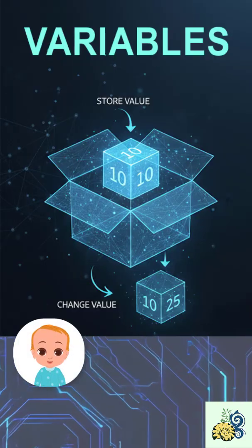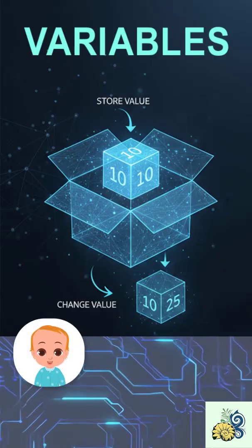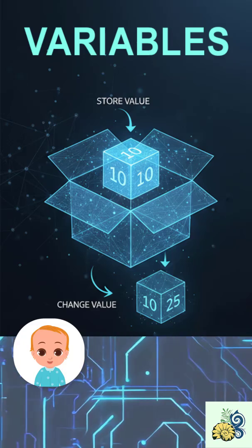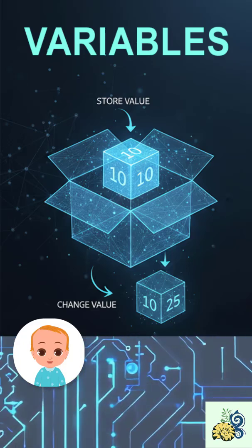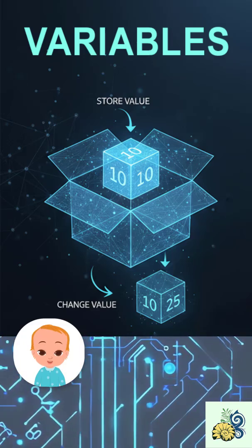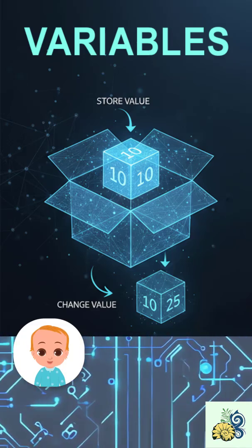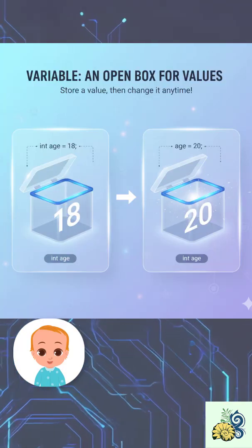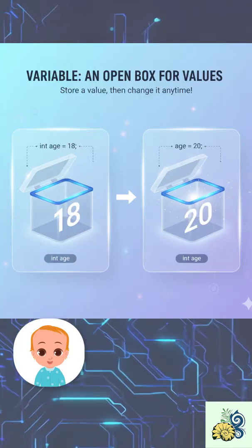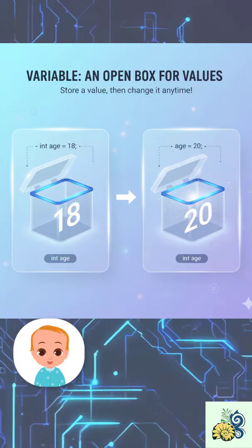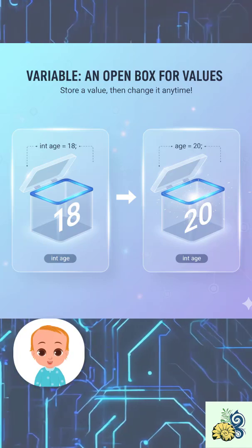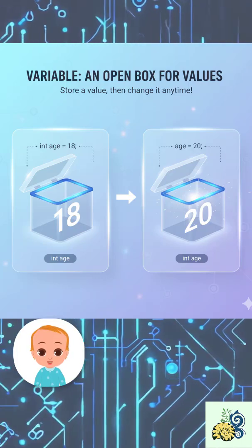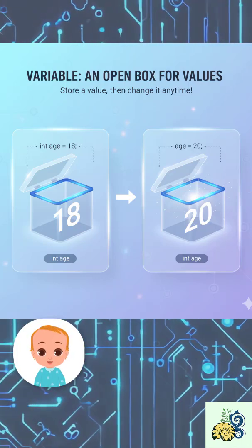So what is a variable? Think of it like a box where you can store a value and change it anytime when it's needed. For example, integer age is 18 — later you want to change it to age 20, it's simple.